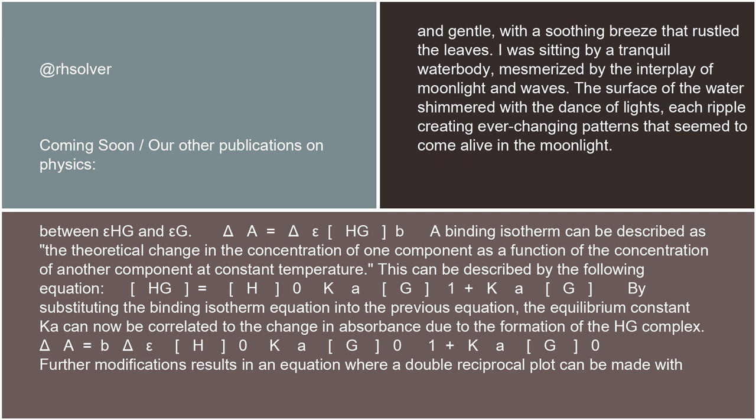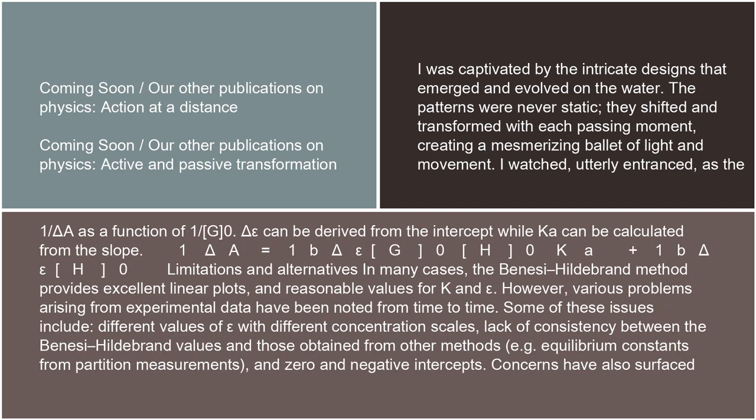Delta A = b · Δε · [H0] · Ka · [G0] / (1 + Ka · [G0]). Further modifications result in an equation where a double reciprocal plot can be made with 1/ΔA as a function of 1/[G0]. Δε can be derived from the intercept while Ka can be calculated from the slope: 1/ΔA = 1/(b · Δε · [G0] · [H0] · Ka) + 1/(b · Δε · [H0]).